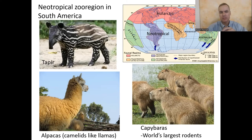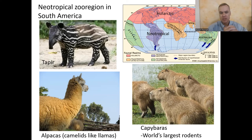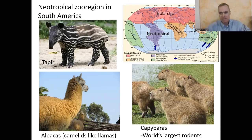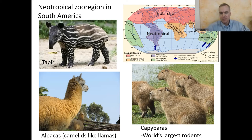There are also a lot of unusual species in South America and the neotropical zoo region, partly because South America was separated from North America for millions of years going back to Pangaea, so species developed in isolation. You have all the camelids — alpacas, vicuñas, llamas, guanacos. You have tapirs with a floppy nose, kind of like a pig. And the world's largest rodents: capybaras, roughly the size of a medium to large dog.